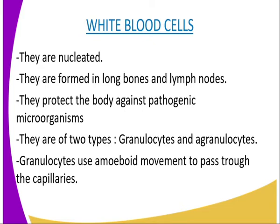In an average healthy man, there are about 600 red blood cells to every one leukocyte cell. However, their number increases greatly during infection. They are formed in the bone marrow of long bones and lymph nodes. Their function is to protect the body against pathogenic microorganisms, including bacteria, protozoa, viruses, and some other secretions.